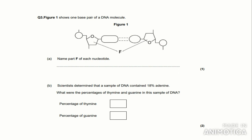Figure 1 shows one base pair of a DNA molecule. Name part F of each nucleotide. A common mistake is misreading this as an RNA molecule, so highlight whether it says DNA or RNA. The answer is deoxyribose — don't confuse it with ribose, which is in RNA.